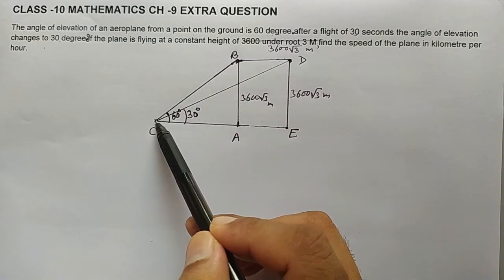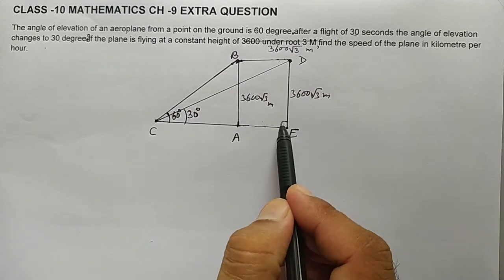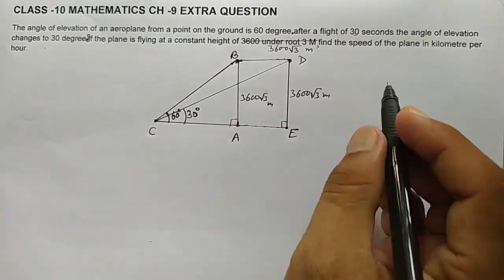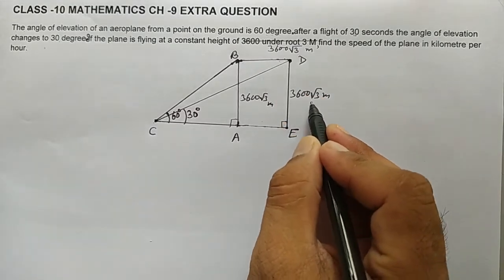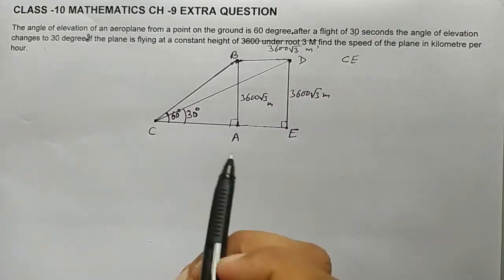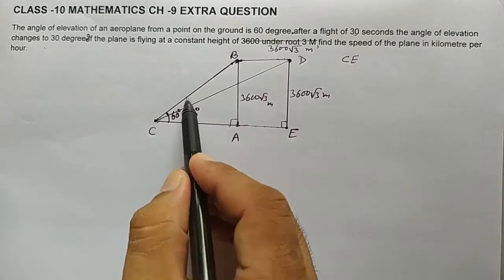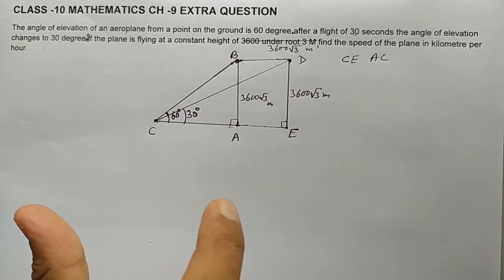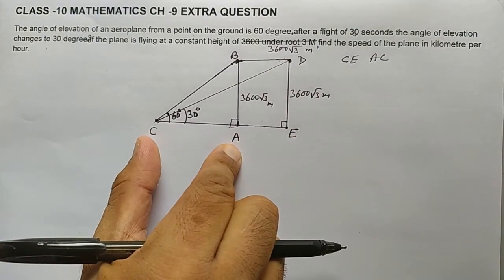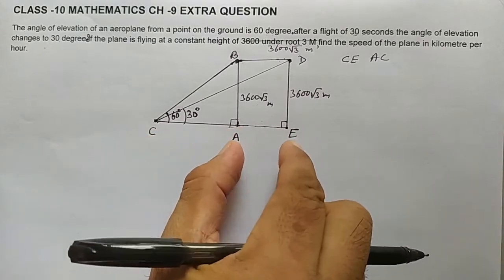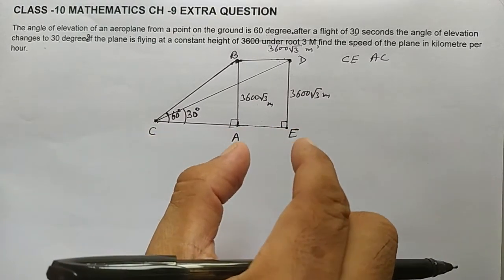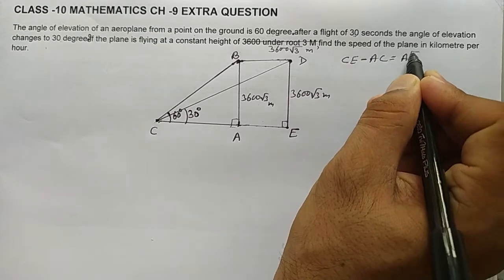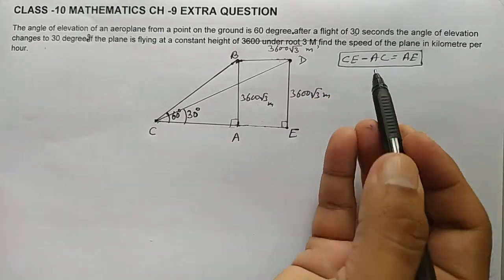To find AE, we use two right-angled triangles. In the big right-angled triangle CDE, we can find CE. In the small right-angled triangle CAB, we can find AC. Then AE = CE minus AC. So by subtracting these two values, we get the distance AE.